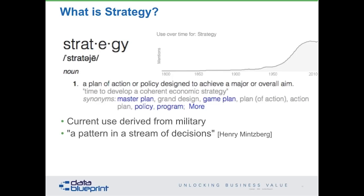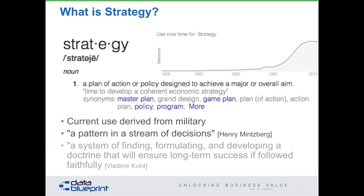Another definition: strategy is a system of finding, formulating, and developing a doctrine that will ensure long-term success if followed. One of the more famous examples is Napoleon. The question that came up from a strategy perspective is: I've got a small force and there are two bigger forces arrayed against me — how do I defeat the competition when the competition is actually bigger? The answer, of course, is divide and conquer. Napoleon didn't have a step-one, step-two, step-three plan — what he did have represents a good example of a pattern in a stream of decisions.